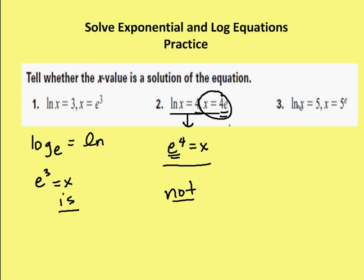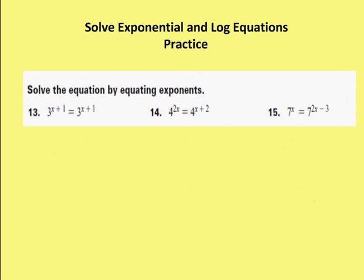In the third, again, I rewrite this as e to the fifth is equal to x. And I can see that this is saying x is equal to 5 to the e. So the second part after the comma is not a solution of the equation. Moving on to the next set of problems.